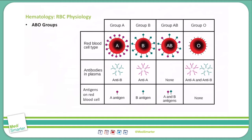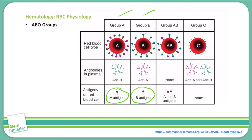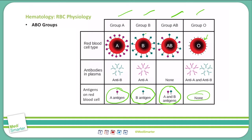Now let's look at the ABO blood groups seen with red blood cells. You have four different blood groups as well as an Rh factor. With the blood groups, you have group A, group B, group AB, and group O. In group A, there is an A antigen present on the cell surface. Group B shows a B antigen on the surface. Group AB will show both A and B antigens on the surface. And in group O, there are no antigens on the surface.